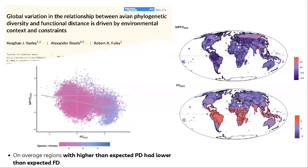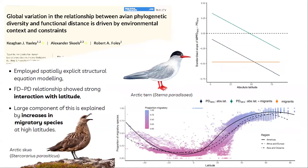Plotting the relationship between the two variables, we found an overall negative relationship: regions with higher-than-expected phylogenetic diversity had lower-than-expected functional diversity. We then used a spatially explicit structural equation modelling approach, including an interaction term so we could model how the FD-PD slope changes across different latitudes — latitude treated as an absolute value, so really distance from the equator.